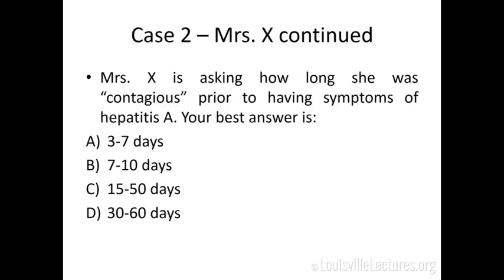Mrs. X asks how long she was contagious prior to having symptoms — essentially a question about incubation period. The actual incubation period is reported as 15 to 50 days, with an average of 28 days. The shortest incubation period is about two weeks. 70% of adults are going to be symptomatic. With kids, it's the other way around — especially very young kids in hyperendemic areas who get infected young, have no symptoms, and develop lifelong immunity.